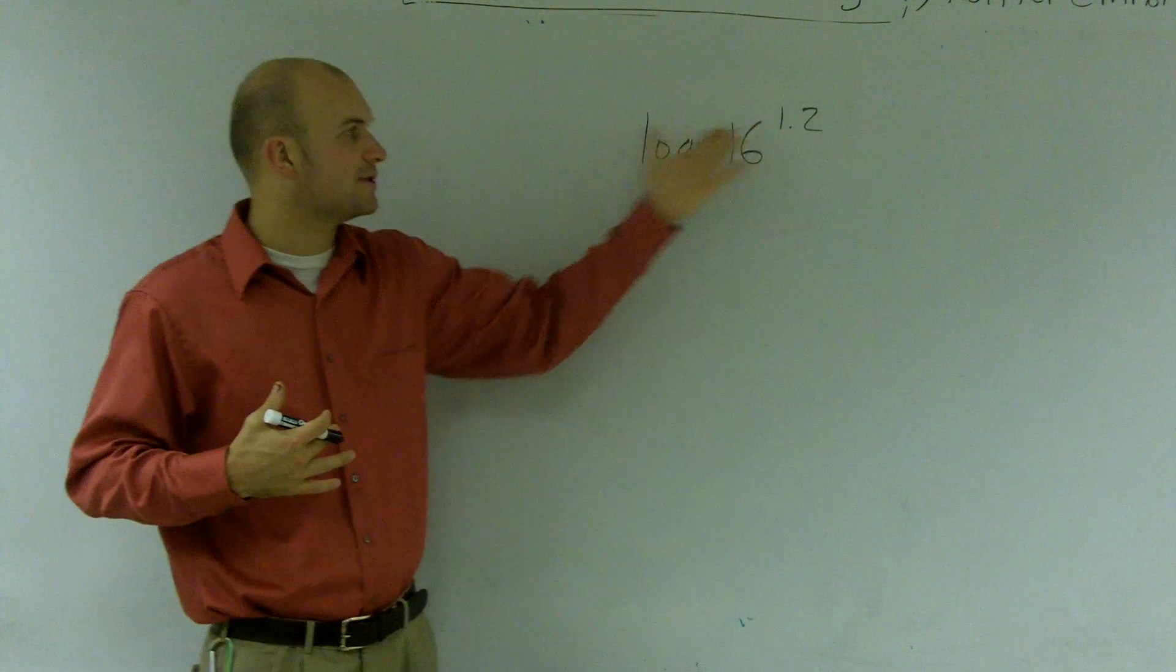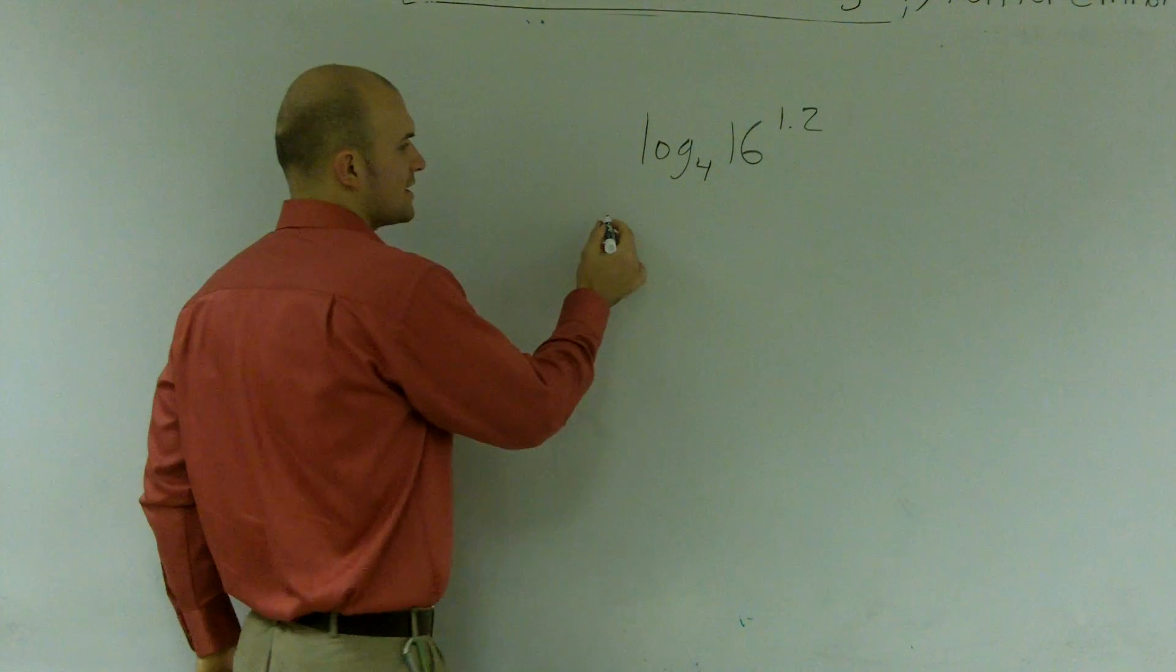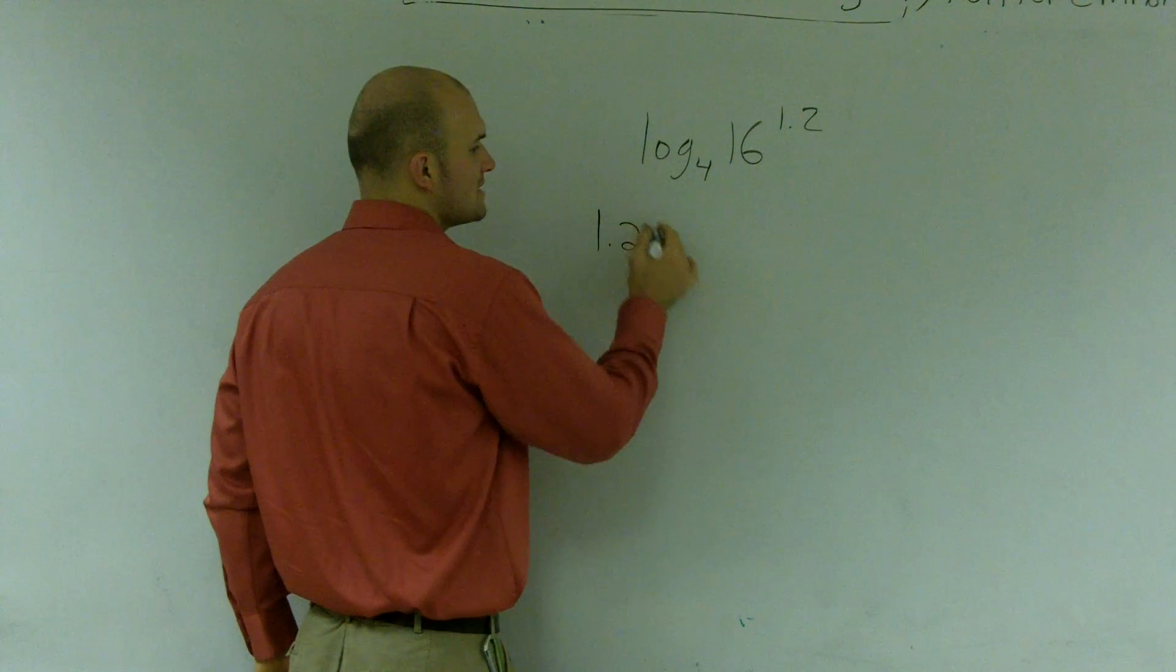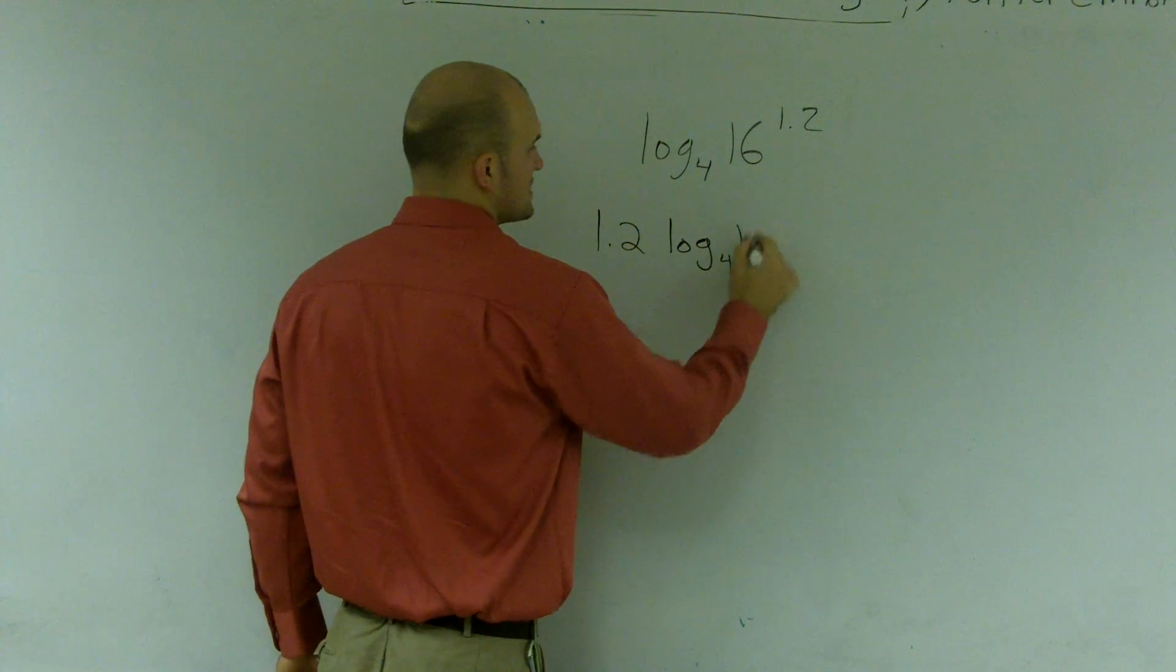Whenever we have an exponent, we can always bring that exponent out in front. So now I can rewrite this as 1.2 times log base 4 of 16.